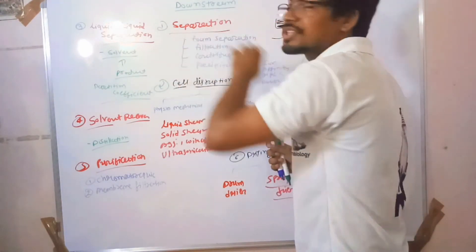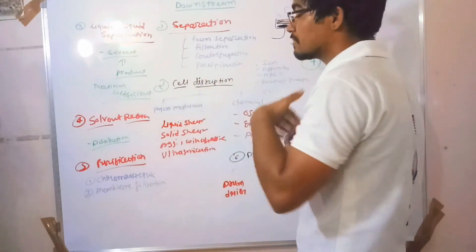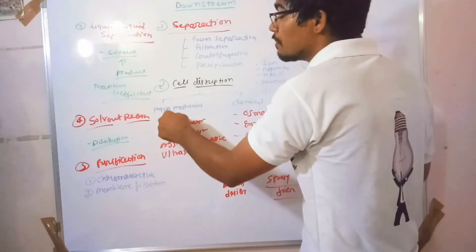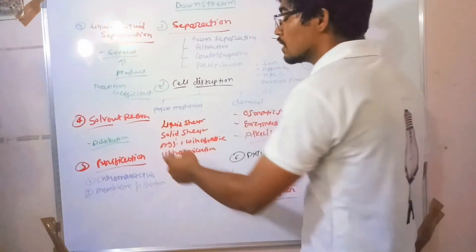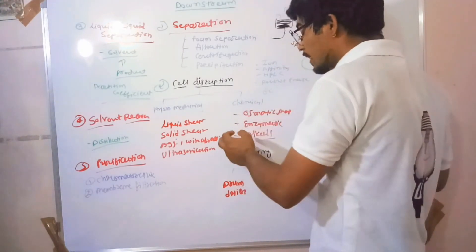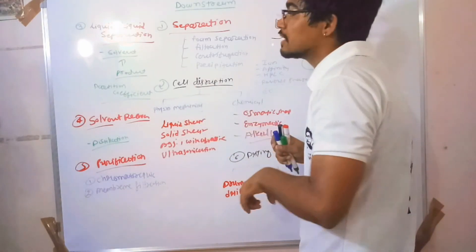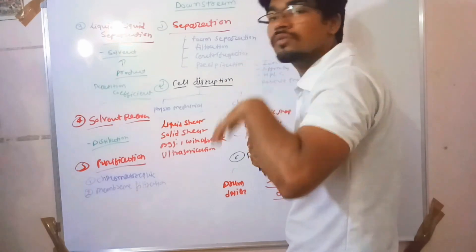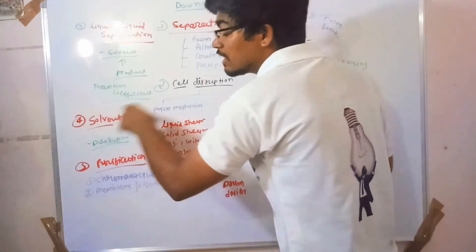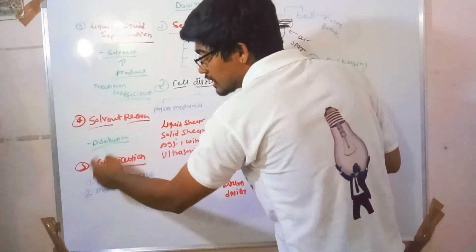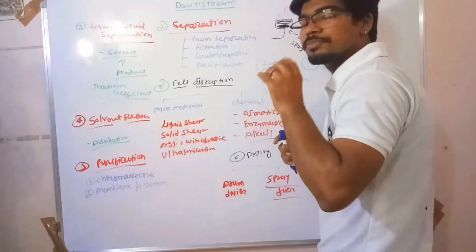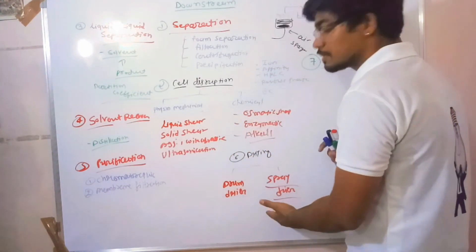To summarize: first is separation of cells by foam separation, filtration, centrifugation, and precipitation. If our product is intracellular, we go for cell disruption by physico-mechanical methods — liquid shear, solid shear, agitation with abrasives, and ultrasonication — or chemical methods such as osmotic pressure, enzyme digestion, and alkali treatment. After cell disruption we do liquid-liquid extraction, then solvent recovery, then purification by chromatography or membrane filtration, then drying by drum dryer or spray dryer, and finally packaging.